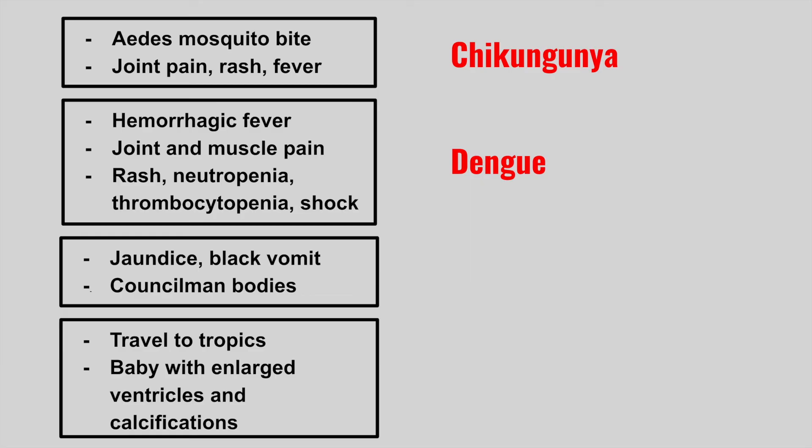The next patient, same mosquito, but now they get jaundice, black vomit, and we see Councilman bodies. This is yellow fever — easy to remember because it makes you yellow due to the jaundice. The next one, same mosquito bite but with travel to the tropics, and the baby is going to have enlarged ventricles and calcifications in the brain. This is Zika virus.